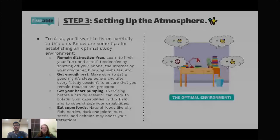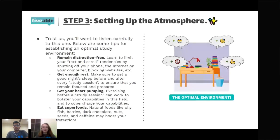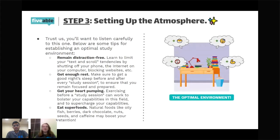Now we're going to talk about setting up the atmosphere for studying — this is so important because it ensures an effective study session. The first step is to remain distraction free. We always have our phones buzzing, checking texts, Snapchat. There are resources to make sure you're not distracted — like putting your phone on silent mode. I use an app called Flora: you plant a tree, and if you exit the app to go on Instagram or Facebook, it kills the tree. It's also an extension you can get on Chromebooks.